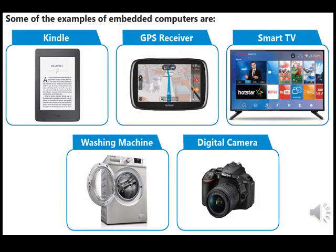Some examples of embedded computers are: 1. Kindle; 2. GPS receiver; 3. Smart TV; 4. Washing machine; 5. Digital camera.